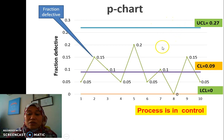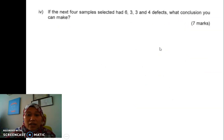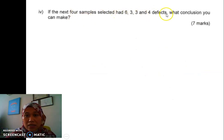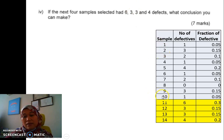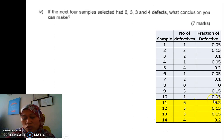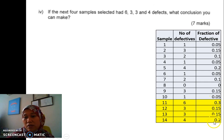From this graph, we can say that the process is in control since none of the fraction defective values go above or outside the upper control limit. Now, what if they add another four samples? Here are the data. Remember, we've done until sample 10, then we add another four samples. We need to do the fraction defective for those four new samples.